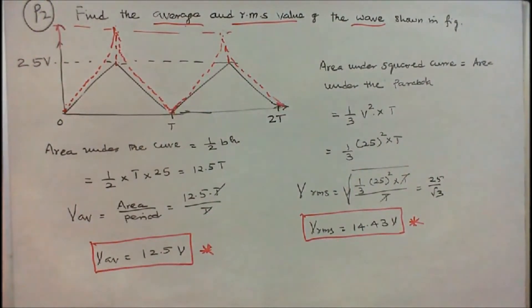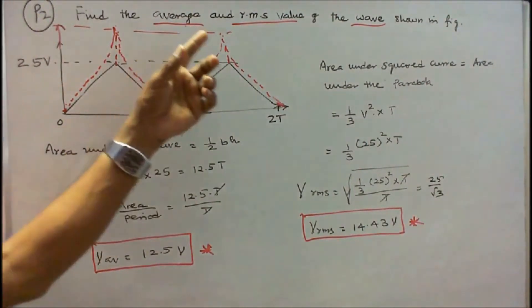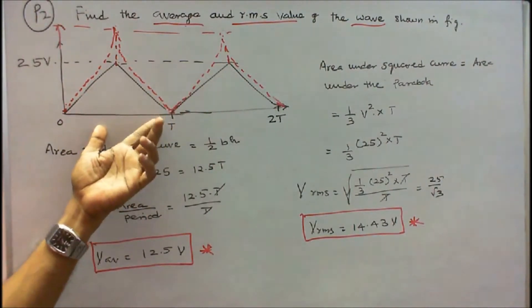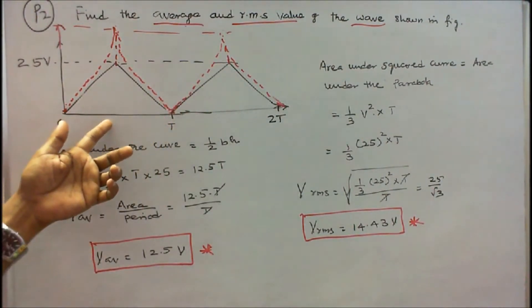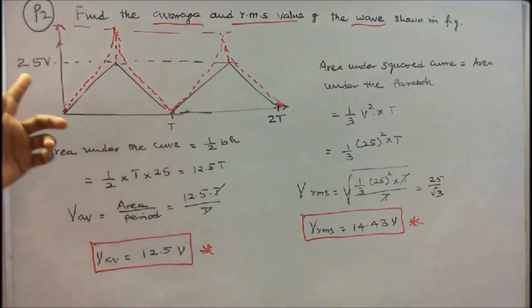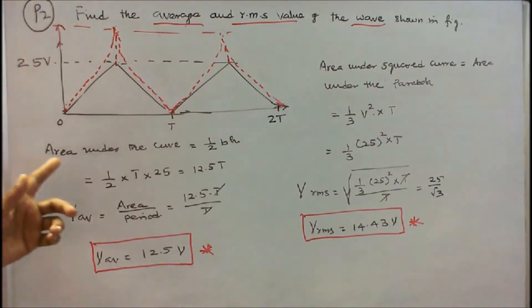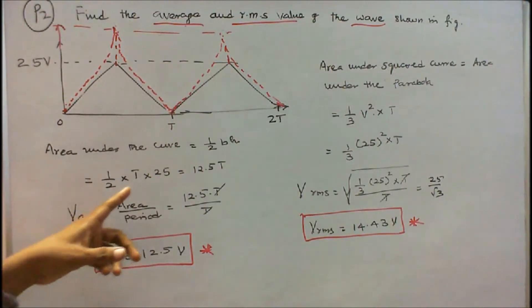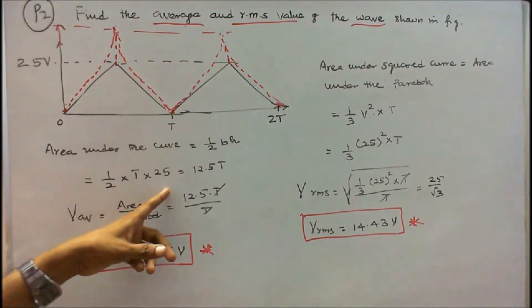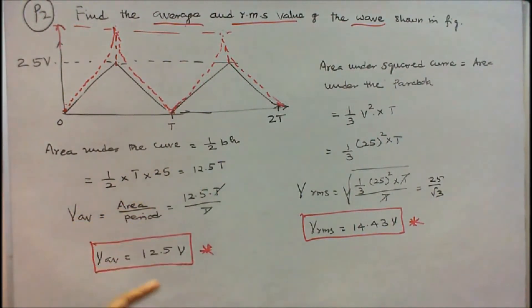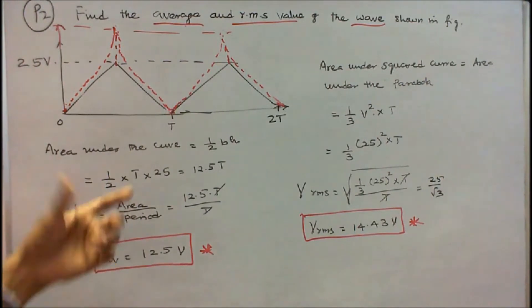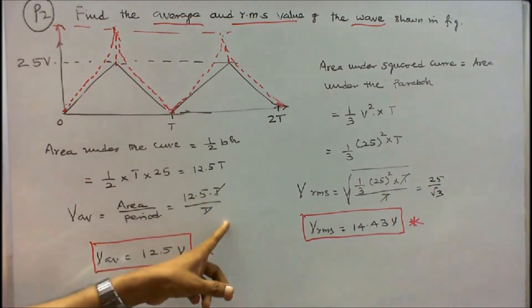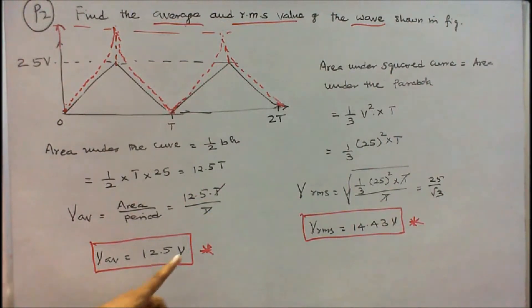Problem 2: Find the average and RMS value of the waveform shown in the figure. This is a triangular waveform where B equals T and H equals 25. The area under the curve equals half times B times H, which is 1/2 times T times 25, giving 12.5T. V average equals area divided by period T, so 12.5T divided by T equals 12.5 volts.